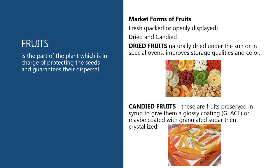Fruits are the part of the plant in charge of protecting the seeds and guaranteeing their dispersal. Market forms of fruits: fresh, packed, or openly displayed. Dried fruits are naturally dried under the sun or in special ovens, which improves storage qualities and color. Candied fruits are fruits preserved in syrup to give them a glossy coating or glaze, or may be coated with granulated sugar and crystallized.